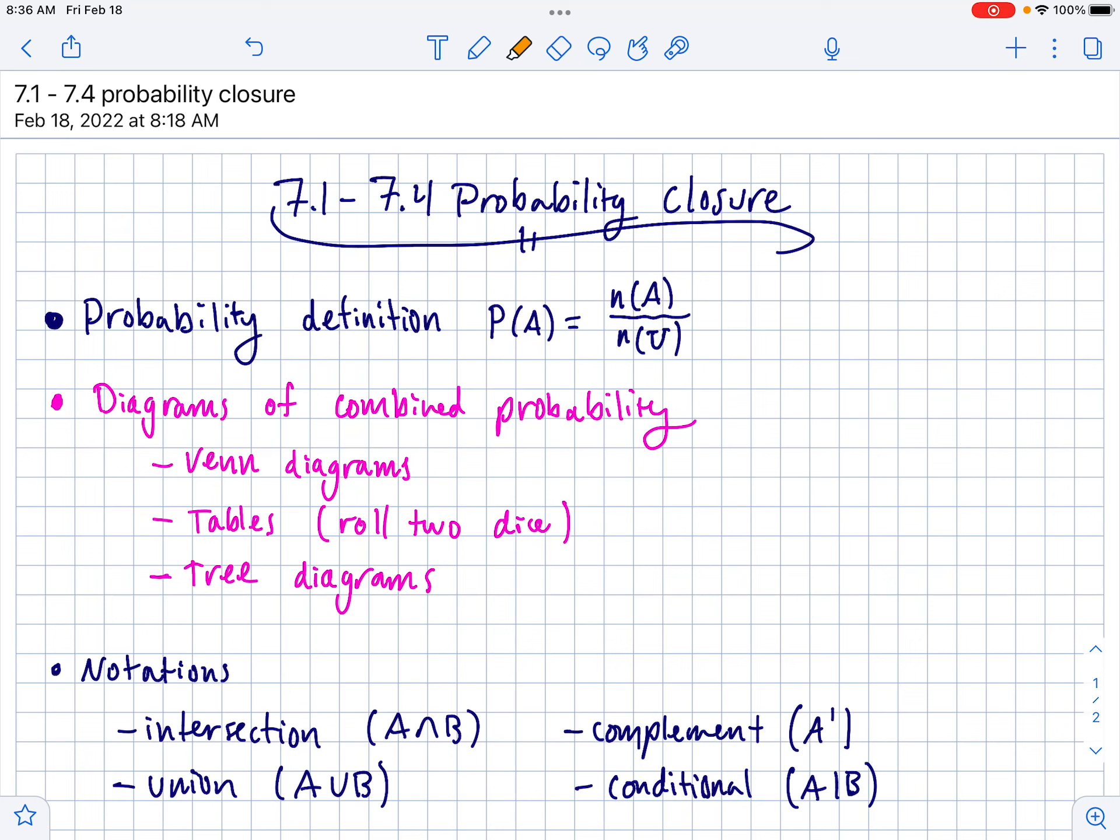So first up, you should know the definition of probability, where you can use this notation where a little n on the outside means the number of things in the sample space that happen a certain way. If you're looking for the probability of A, it's the number of ways that A can happen divided by the number of ways that all things can happen in the universal set.